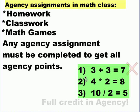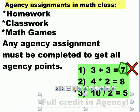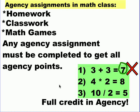Here's an example of three problems that the teacher decided to grade using agency as the learning outcome. Now even though 3 plus 3 is not 7, and it's wrong, this student would get full credit in agency because this student tried all three of these problems. The teacher would circle this answer and give it back to the student so that the student can go ahead and try again — but this would still be full credit in agency.